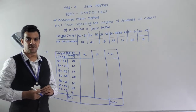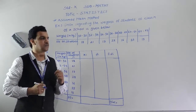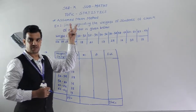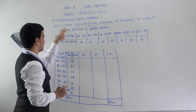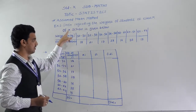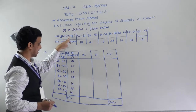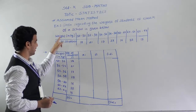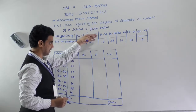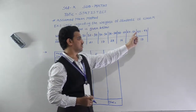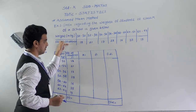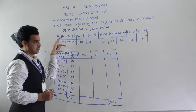Hello students, today we are going to solve more examples on the assuming method, or we can say the shortcut method. The example here gives data regarding the weights of students of Class 10 of a school. Class intervals are given — weight in kilograms from 50–52 up to 62–64 — along with their frequencies.